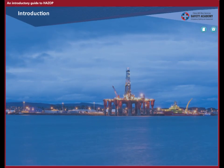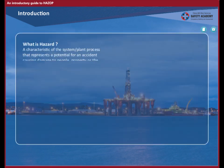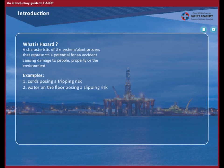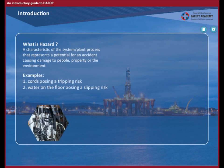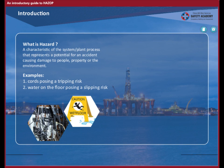Let's get started with some key definitions. What is a Hazard? How is it defined? It is a characteristic of the system, plant or process that represents a potential for an accident causing damage to people, property or the environment. Cords posing a risk of tripping or water on the floor posing a slipping risk are good examples.